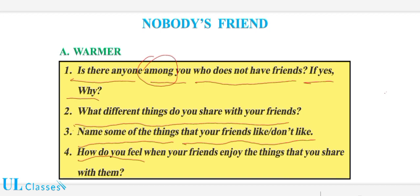اس کے بعد چوتھی لائن ہے: 'How do you feel' — آپ کیسا محسوس کرتے ہیں 'when your friends enjoy the things that you share with them' — جب آپ کے دوست لوگ ان چیزوں سے مزے کرتے ہیں جو آپ ان کے ساتھ شیئر کرتے ہیں — تو آپ اس وقت کیسا محسوس کرتے ہیں۔